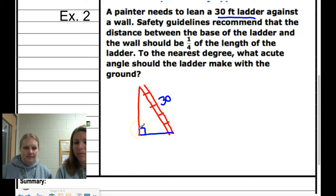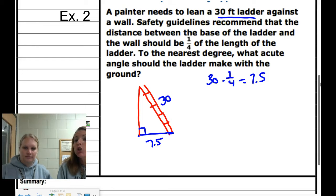Safety guidelines recommend that the distance between the base of the ladder and the wall should be one-fourth of the length of the ladder. So 30 times one-fourth equals 7.5 - that's how far it needs to be away from the wall. To the nearest degree, what acute angle should the ladder make with the ground? There's our angle.